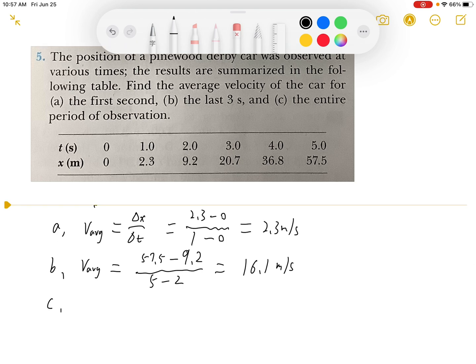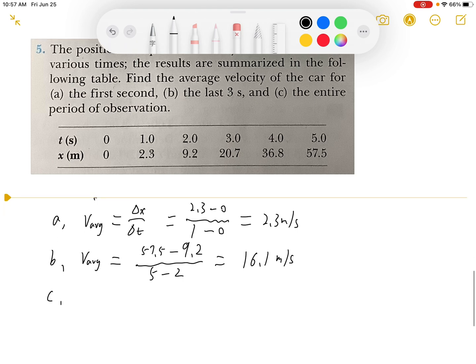For part C, it's the entire period. So v_avg equals 57.5 minus 0 over 5 minus 0, which gives us 11.5 meters per second.